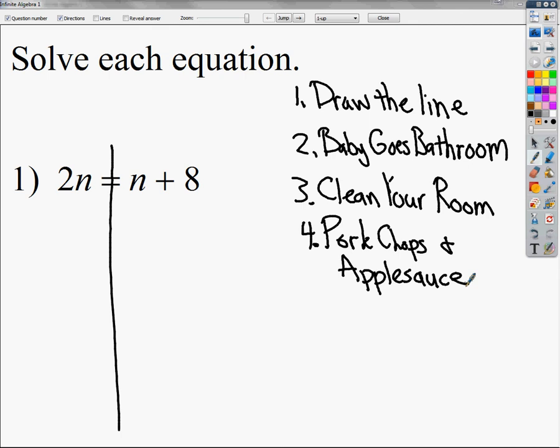The reminder here is that at this point in the equation, we have a variable term on both sides. We've got 2n on the left and an n on the right. Pork chops and applesauce reminds us that we need to move all of the variable terms to one side and all of the integer terms to the other. I need to eliminate one of the n terms on its side of the equation. 8 is already on the right side, so I'm just going to move this n. This is plus n because the n is in an add-subtract relationship with the 8. In order to get rid of plus n, I need to subtract n.